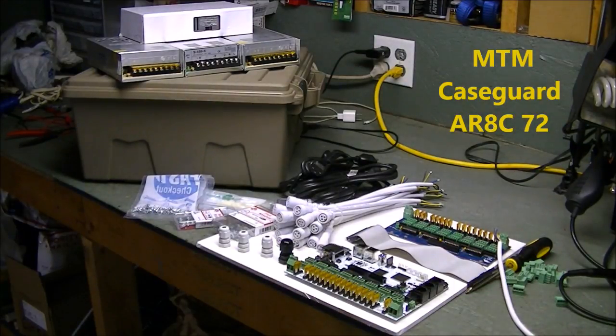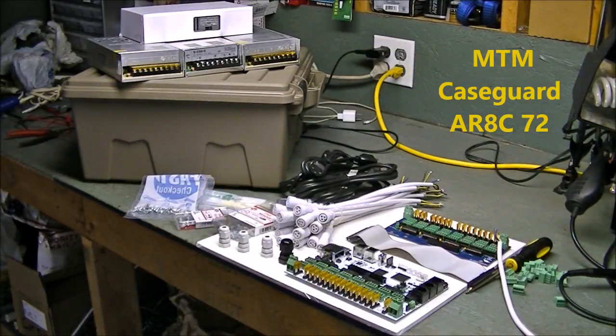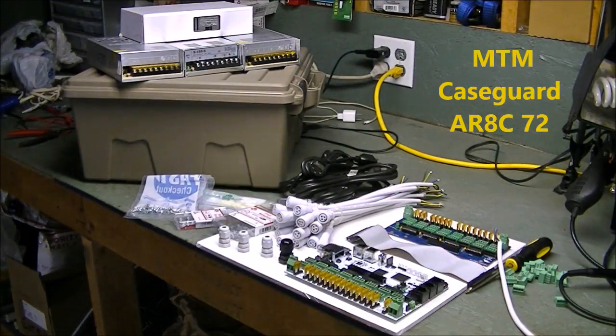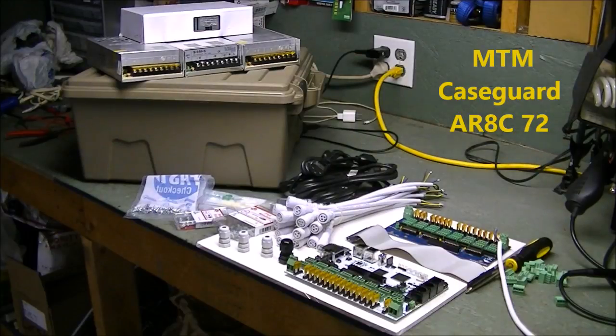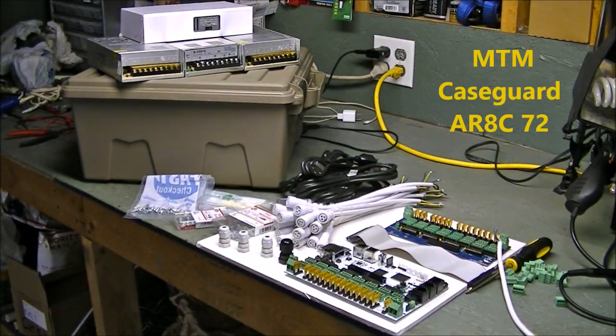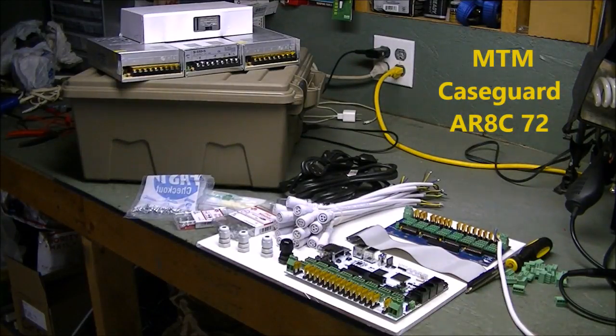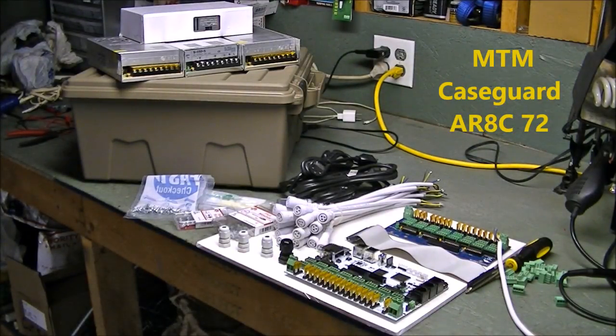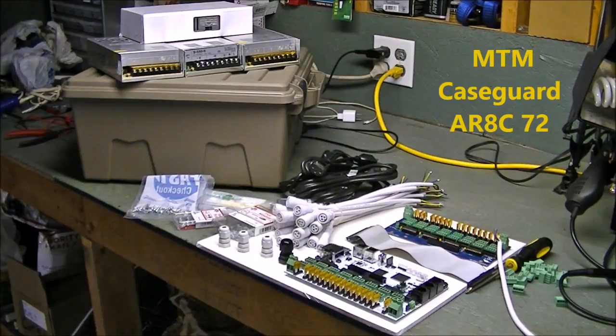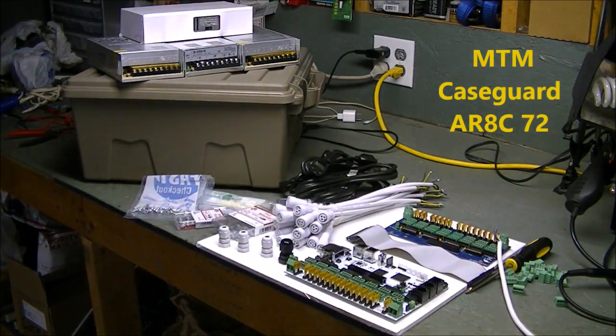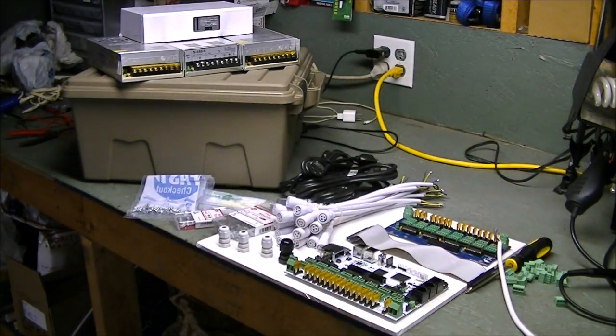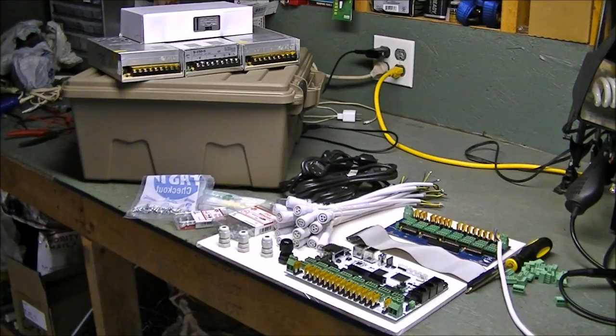Rob suggested this case because he'd seen it being used, and I wholeheartedly agree. The case is made by MTM Case Guard. You can find them on Amazon, but I actually went to Rural King down here in Connellsville, PA. We stopped over there and picked one of these up. It was like 20 bucks, and the model number is AR8C72. I'm going to go through absolutely every single step and film all of the process.